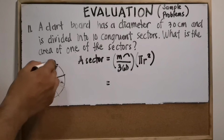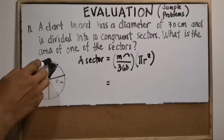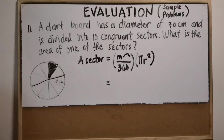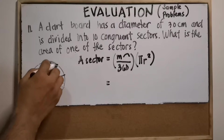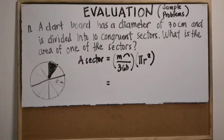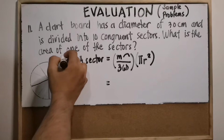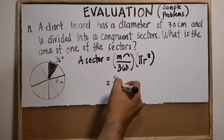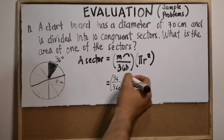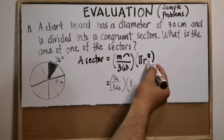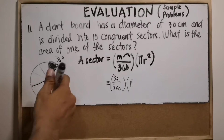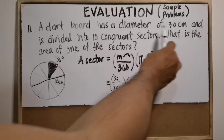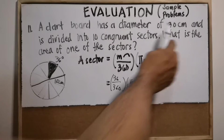One full revolution of the circle is 360 degrees and there are 10 equal parts, so 360 divided by 10 is 36. The measure of the arc is 36 degrees. So we have 36 over 360, times pi, then substitute the radius which is 15 centimeters — because the diameter is 30, and 30 divided by 2 is 15.